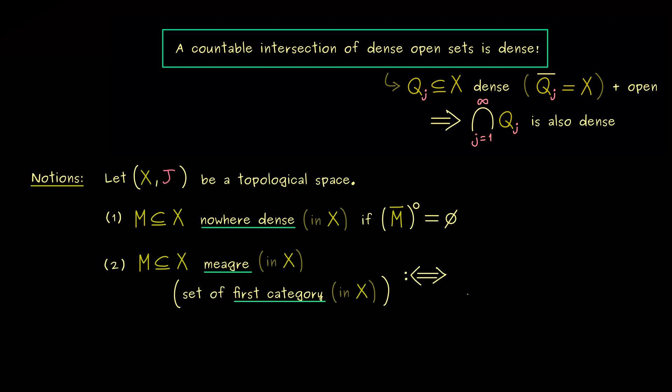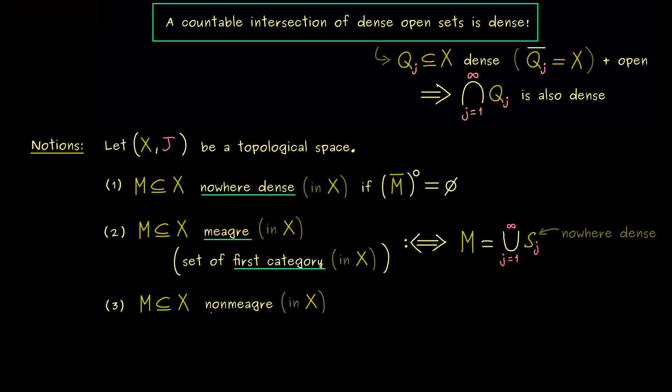So, the set M is called meager or of first category if it can be written as a union. But of course not any union, first it should be a countable union. So as before we could say we have j that goes from 1 to infinity. And then we have the set S_j and all these sets are nowhere dense. So you see, since we can write M as a union of nowhere dense sets, we call the set meager. So roughly speaking it means the set is small compared to the whole space. And then of course we can also define the opposite of that.